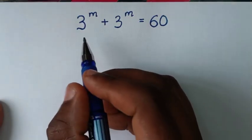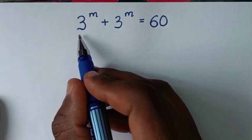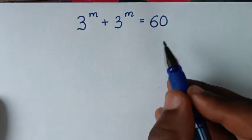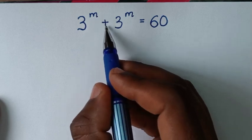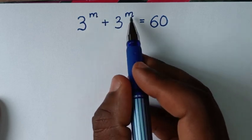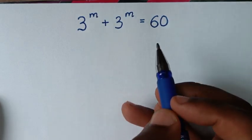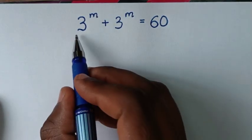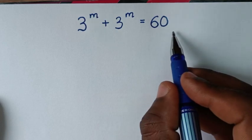Welcome. We are going to solve this math problem: 3 power m plus 3 power m is equal to 60. We need to find the value of m from this equation.